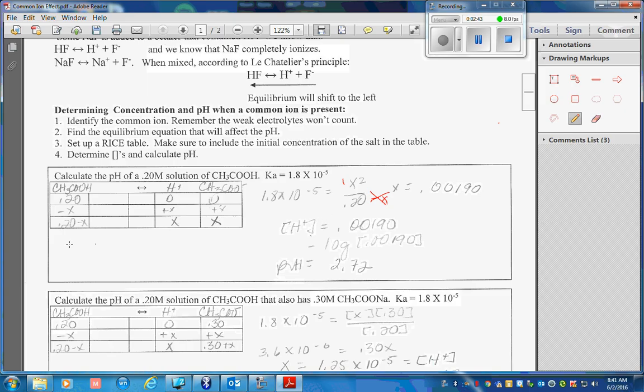That x is the hydrogen ion concentration. And I take the negative log of that hydrogen ion concentration. And I find that the pH is 2.72.